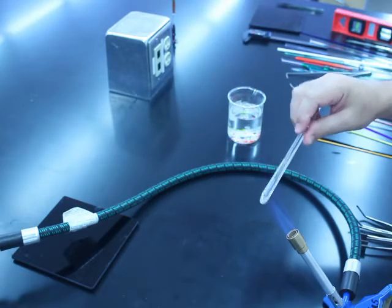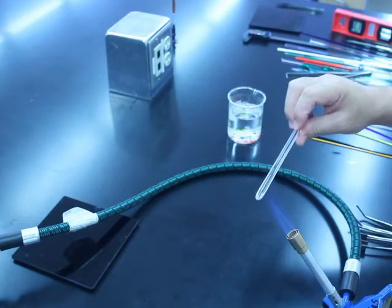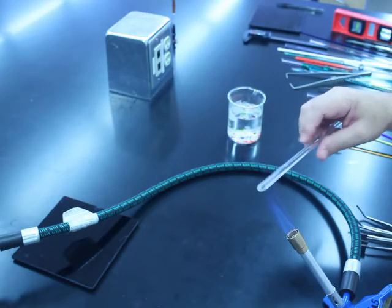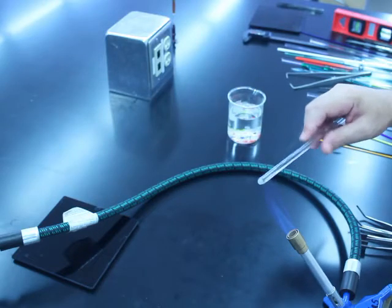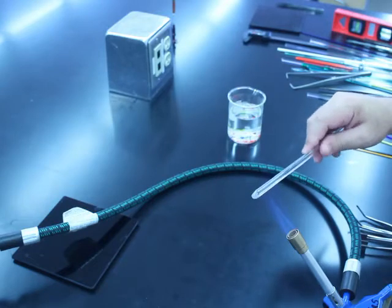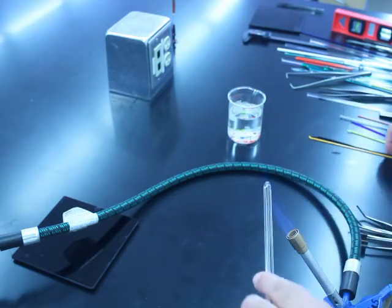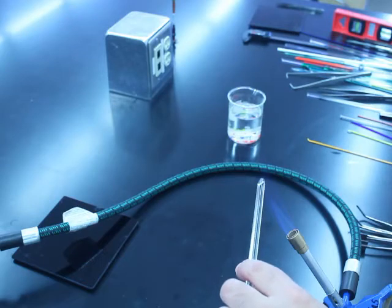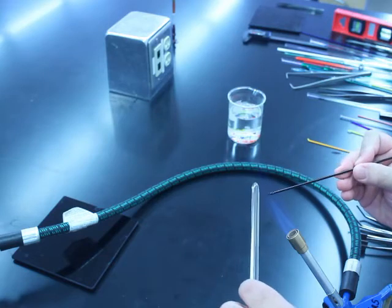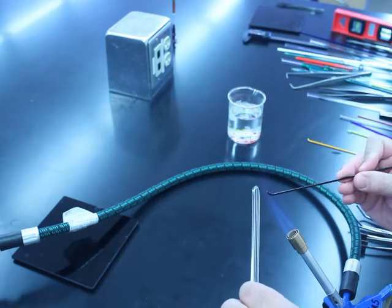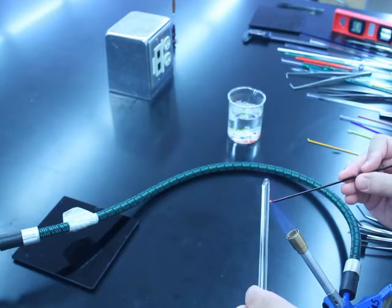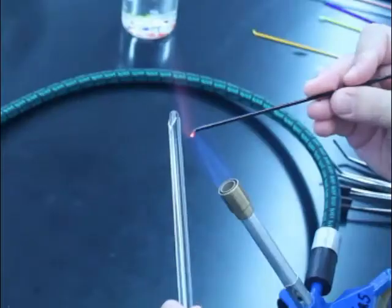So I would recommend saving this particular demo for an opportunity when you've got some dead time, like say the students are working on making glass chains or something like that. You could start the fish demo and let them watch as they get an opportunity. So now I'm going to streak some black glass onto the rod.